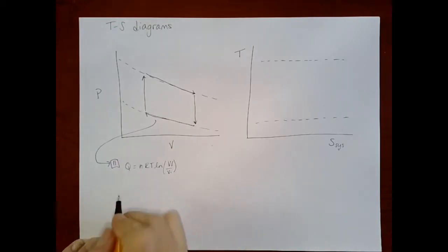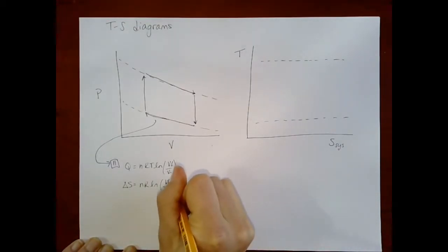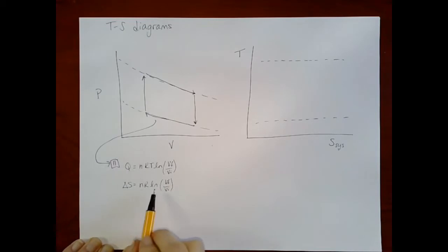From here, I can also calculate, I'm not doing this derivation explicitly, but you should make sure that you can calculate or get to the answer that the change in entropy for this process is nR natural log of V final over V initial. Making sense that there's no temperature dependence that emerges in the isothermal process.